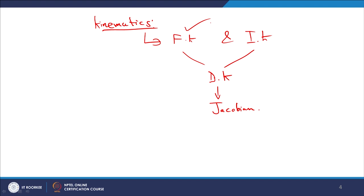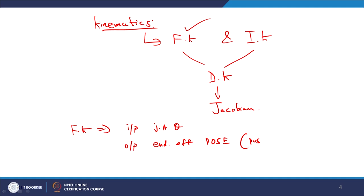What is forward kinematics? Forward kinematics is basically where the input is the joint angle theta, and the output is the end effector position — the end effector's pose, that is, position plus orientation. Orientation could be expressed as alpha, beta, gamma — the Euler angles.